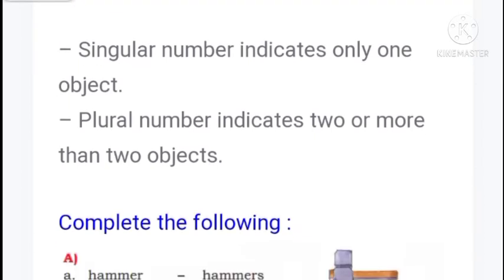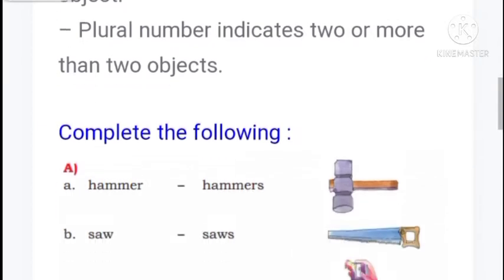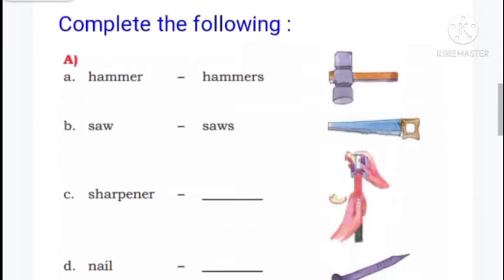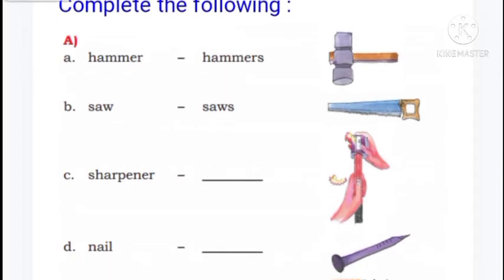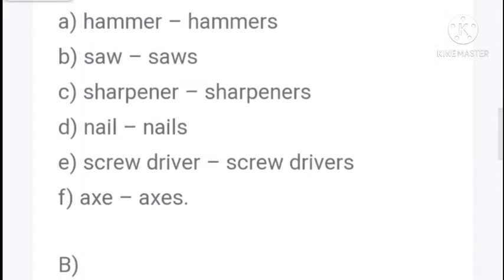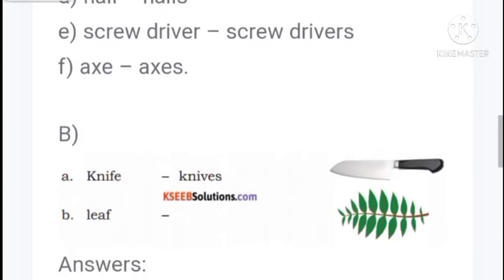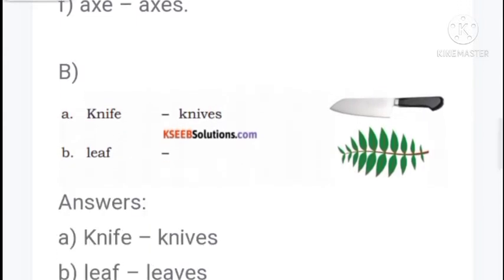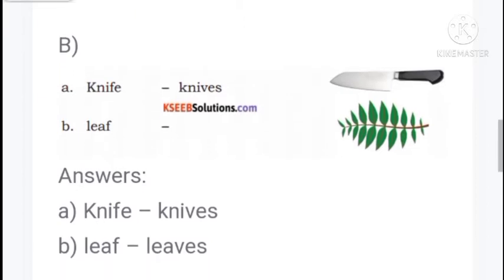Now, singular and plural. Singular means indicating one object. Plural means indicating two or more objects. Complete the following: hammer - hammers, saw - saws, sharpener - sharpeners, nail - nails, screwdriver - screwdrivers, axe - axes. For some words we remove 'f' and add 'ves'. For example: knife - knives, leaf - leaves.